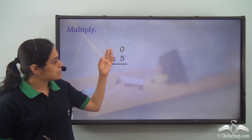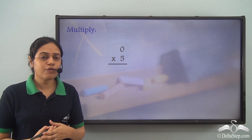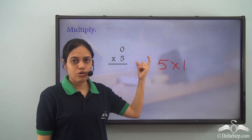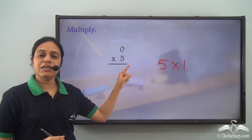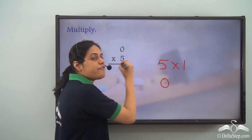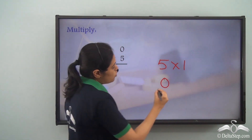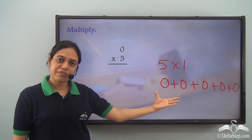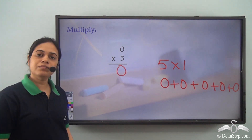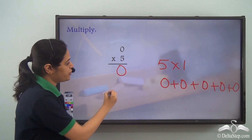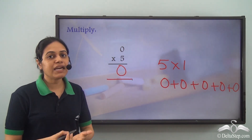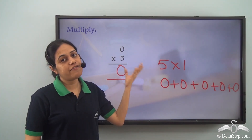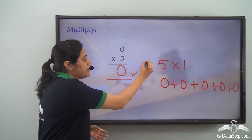Now what will be 0 into 5? We know in the table of 5 we start with 5 into 1 — we don't have 5 into 0. So how do we get this answer? This means 0 added 5 times: 0 plus 0 plus 0 plus 0 plus 0. Zero added 5 times gives me 0. So 0 multiplied by any number — be it very small or very large — will always give me 0.